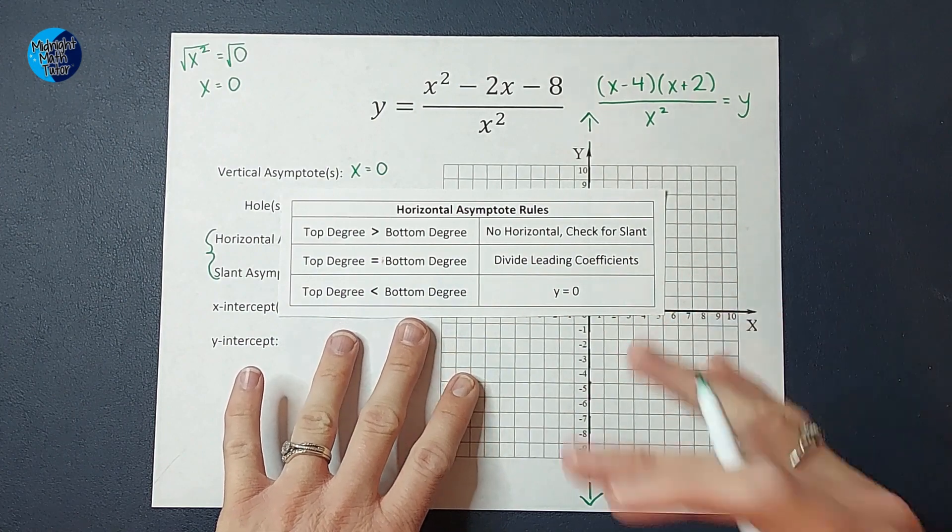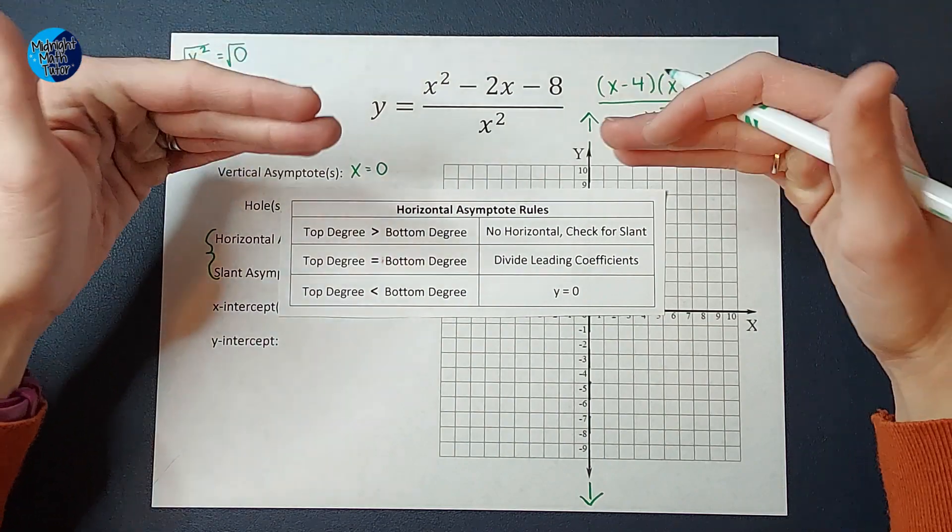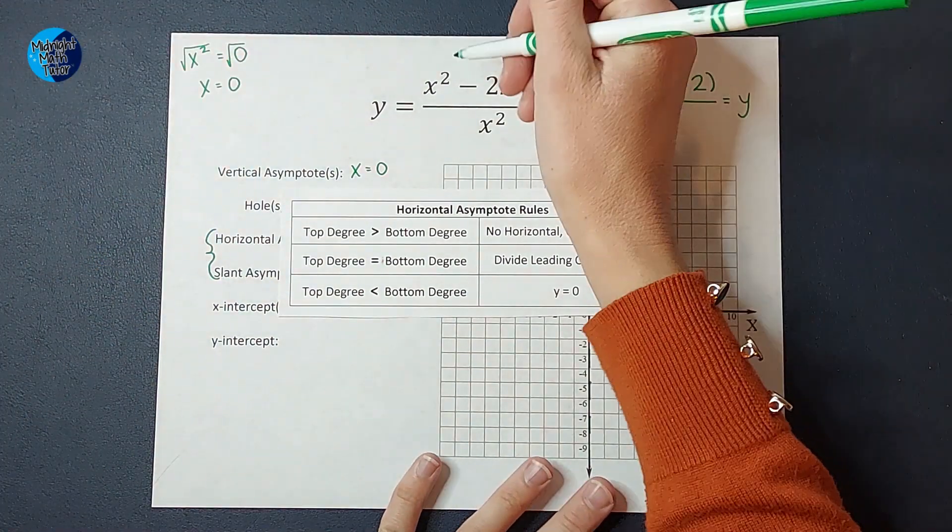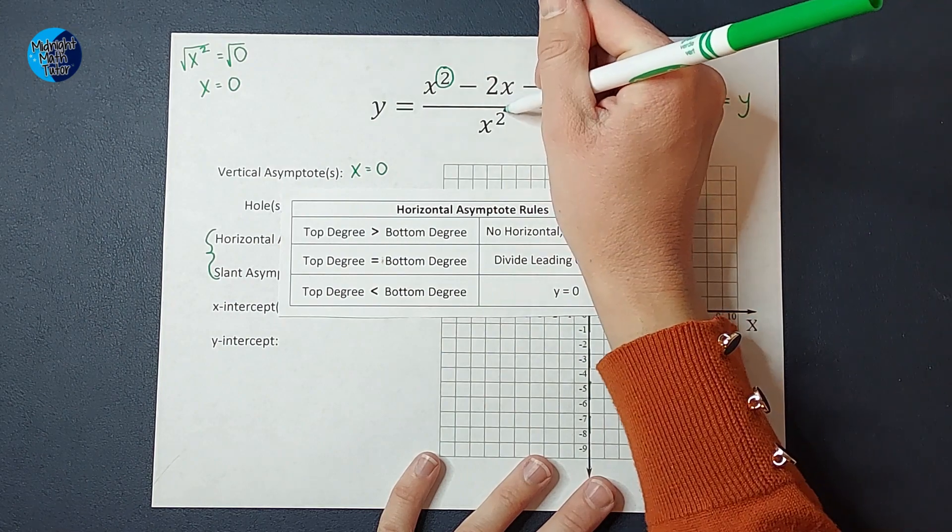All right. For these, we check our degree. The degree is the highest exponent and we're looking at it in the numerator and the denominator. So on top, my degree, my highest exponent is two. And in the bottom, it's also two.